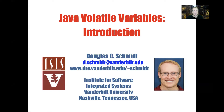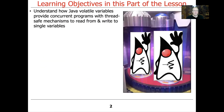Let's turn our attention to another aspect of the Atomics features in Java — Java volatile variables. We're going to talk about how volatile variables can be used to provide concurrent programs with thread-safe mechanisms to read from and write to single or individual variables.